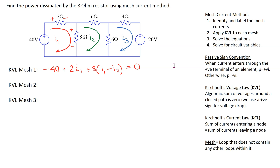Now let's apply Kirchhoff's voltage law to mesh 2. In mesh 2 we have three resistors. Starting with the 8 ohm resistor, we follow the direction of mesh current I2 and mark voltage polarities accordingly — the end where I2 enters is positive, the other end is negative. Similarly for the 6 ohm resistors. For all three resistors, I2 is entering the terminal marked positive, so applying passive sign convention they are all written with a plus sign.